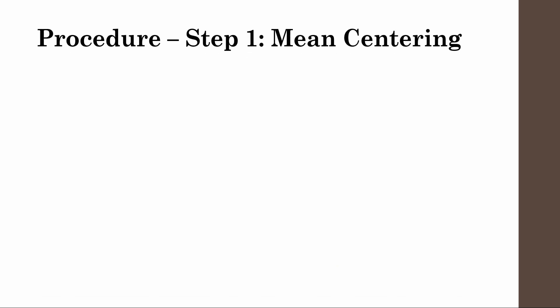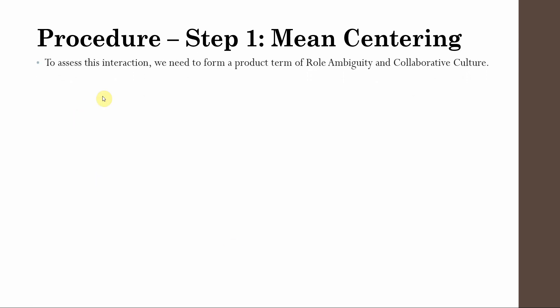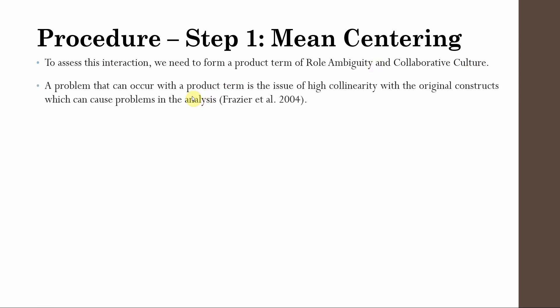What is the procedure for running moderation analysis? Step one is to assess the interaction — we need to form a product term of role ambiguity and collaborative culture. A problem that can occur with a product term is a high level of collinearity with the original constructs, which can cause problems in the analysis. If you have an interaction term along with the independent variable and the moderator in the same model, it can cause this high collinearity issue.